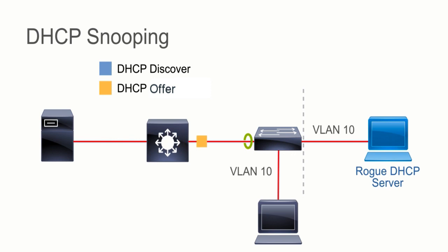Additionally, we can configure rate limiting on a port, which will prevent that attacker from initiating a DHCP starvation attack. He won't be able to initiate enough DHCP requests to starve out the address pool. So DHCP snooping is the method on our Cisco switches that we would use to mitigate against these attacks. Those are our two attacks — DHCP spoofing and DHCP starvation.